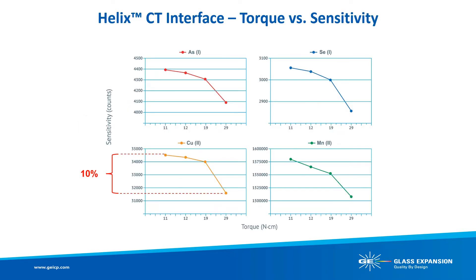Why is constant torque an important feature of Glass Expansion spray chambers? ICP sensitivity is affected by both nebulizer depth within the spray chamber and the torque applied to the nebulizer seal. Data highlights the effects of torque applied to the nebulizer seal versus observed sensitivity: as applied torque was increased incrementally, sensitivity decreased on average by 5%, with the greatest difference being 10%. The new Helix CT locking screw is set to the optimum torque, sealing the press-fit PTFE ferrule to the same torque each day, allowing the analyst to achieve the same nebulizer performance every day.